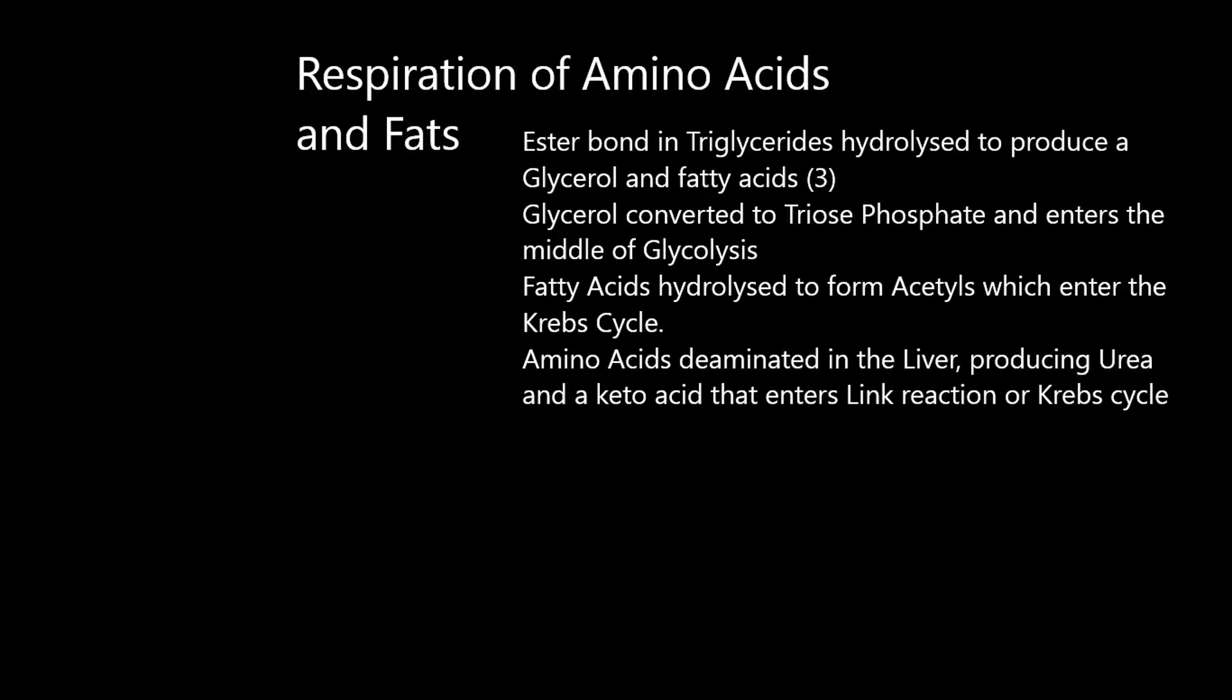Now amino acids vary in their R group, so what happens to them is different for each particular amino acid. First step is it's deaminated in the liver. This produces ammonia that's then converted into urea by being combined with carbon dioxide, and then you eliminate it in the kidney into your urine. The remnants are a ketoacid. That will vary in shape and structure depending on the nature of the R group of the amino acid. That goes into the link reaction or Krebs cycle and powers the production of more ATPs and NADs.